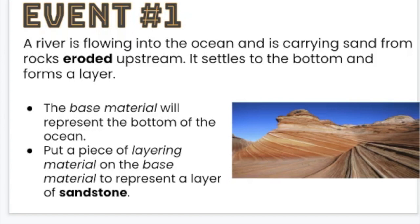Event one. A river is flowing into the ocean and carrying sand from rocks that have eroded upstream. It settles to the bottom and forms a layer. Your base material will represent the bottom of the ocean. Then put a piece of layering material on top of the base material to represent a layer of sandstone from the rocks that eroded from upstream.